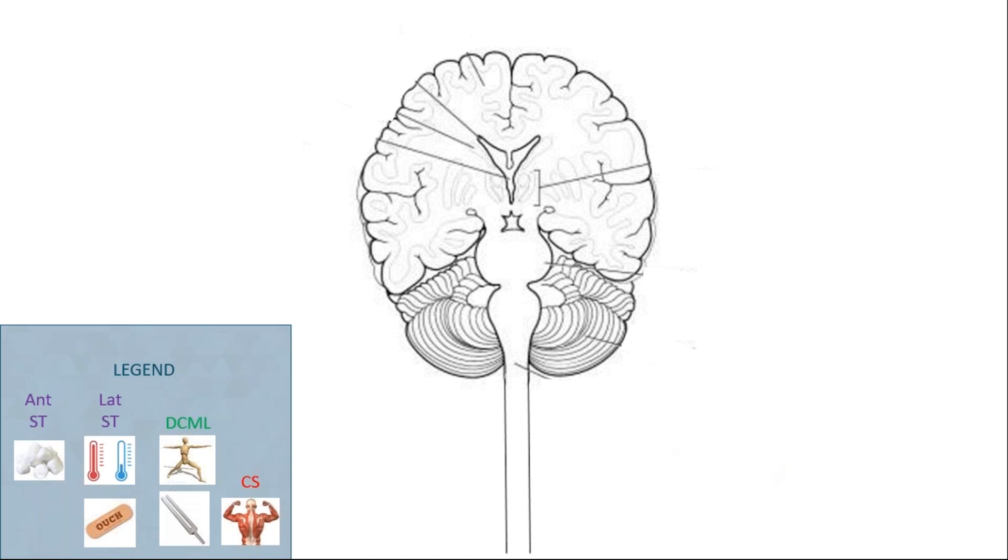Now let's start by tracing these tracts out and we'll start with the sensory tracts. Now while there are two spinothalamic tracts, I will only be drawing one path to represent them both as they travel the same path within the central nervous system. Now for the spinothalamic tracts, we will use purple to represent this tract.